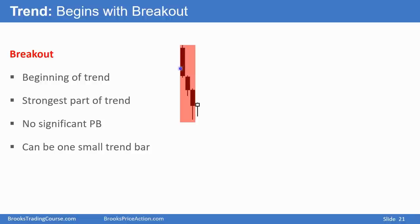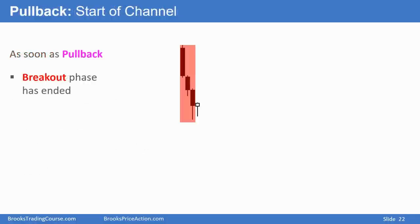In a bear trend, every bear trend begins with a breakout — it can be one bar, it could be five or ten bars. It's the strongest part of the trend and there's no significant pullback. Sometimes there might be a bull inside bar or a one-bar pullback, but in general most of the bars are big bear bars with very little overlap, closing in their lows, with lots of gaps. And on a higher timeframe chart, it's probably simply a single bear breakout bar. And as soon as there's a pullback — a bar going above the high of the prior bar — the breakout phase usually has ended and the market has begun to enter a channel.